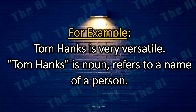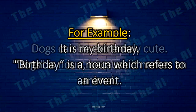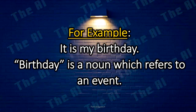Examples. Tom Hanks is very versatile. Tom Hanks is a noun — it refers to the name of a person. Dogs can be extremely cute. Dogs is a noun because it names an animal. It is my birthday. The word birthday is a noun which refers to an event.